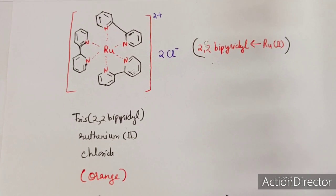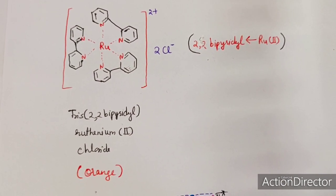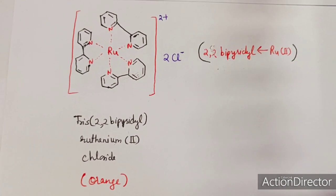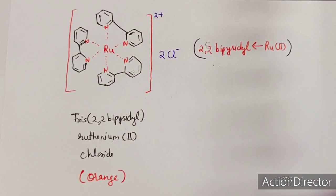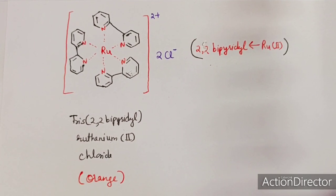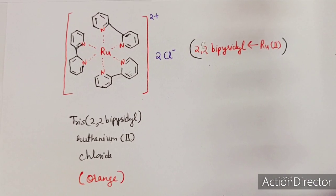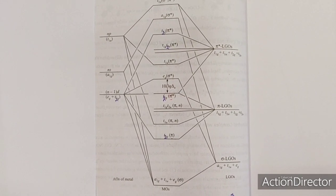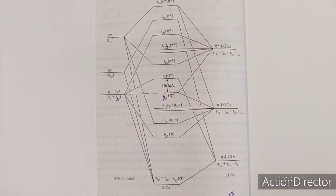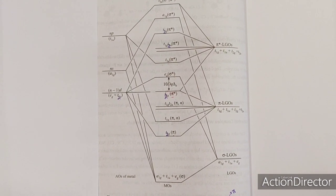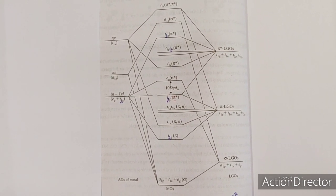Whenever you see complexes with carbonyl ligands, cyanide ligands, thiocyanide ligands, bipyridyl ligands, or phenanthroline, you can identify the transition as metal-to-ligand type charge transfer. Also, if the metal is in its lowest oxidation state like zero, as in carbonyls, they show MLCT type electronic transition. This can be explained using the molecular orbital energy level diagram for octahedral complexes having pi-acceptor ligands.